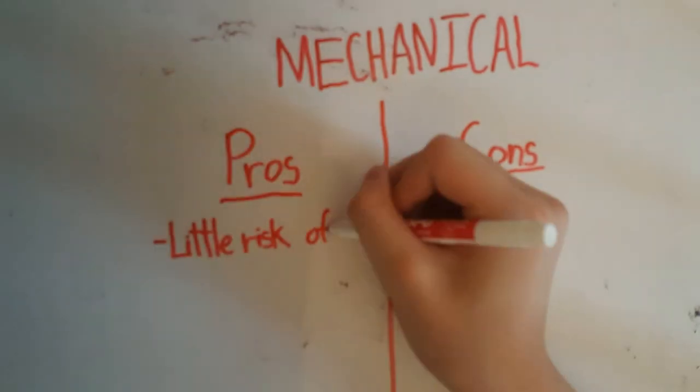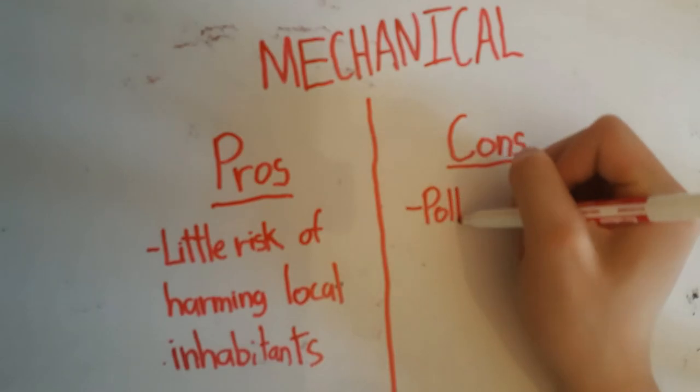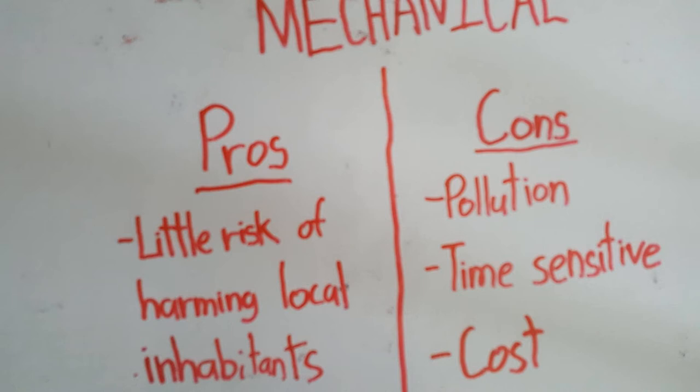Now for the pros and cons. For the pros, mechanical control has small risk of harming the local inhabitants. For the cons, mechanical control may cause pollution in the environment. Mechanical control also costs time and money to maintain the physical barriers.